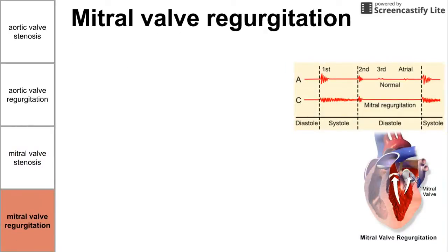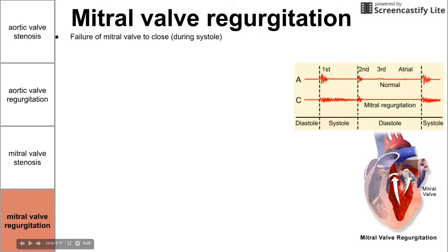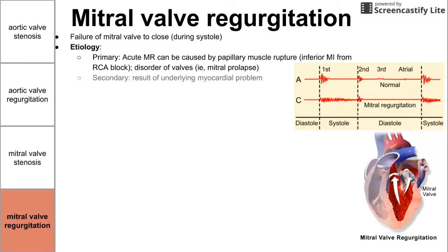The last disease is mitral valve regurgitation — the failure of the mitral valve to close during systole. The murmur for this one happens during systole. This can come from primary or secondary mitral valve regurgitation. Primary or acute mitral valve regurgitation can be caused by a papillary muscle problem. Papillary muscles can rupture from a myocardial infarction, usually due to a block in the right coronary artery. Primary MR can also result from mitral prolapse, when the valves flip backwards into the left atria.